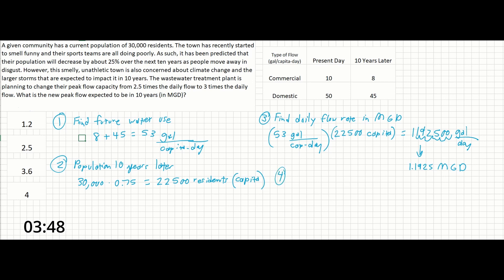And now we have step 4. Find the peak flow in 10 years. The problem tells us that the new peak flow is going to be 3 times the daily flow. So all we have to do here is 1.1925 MGD times 3 and that's going to give us 3.5775 MGD.